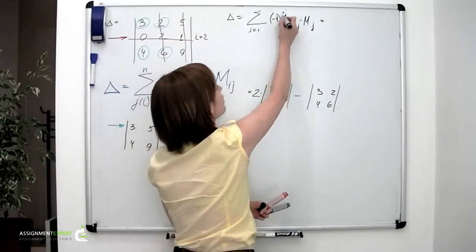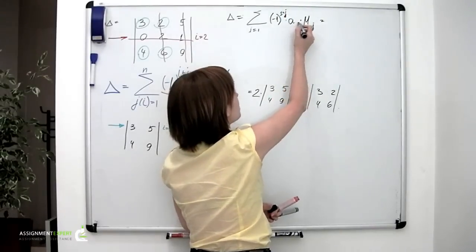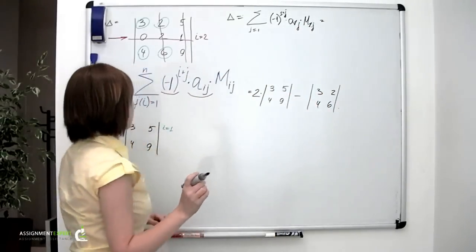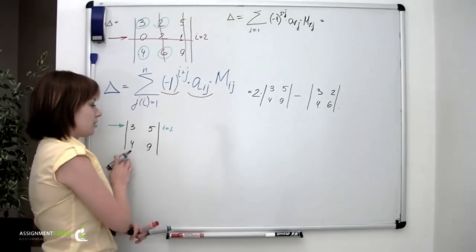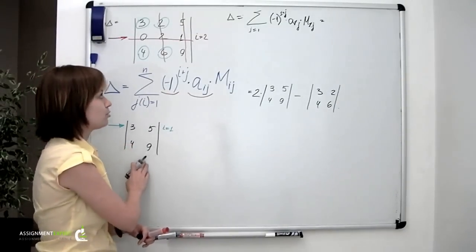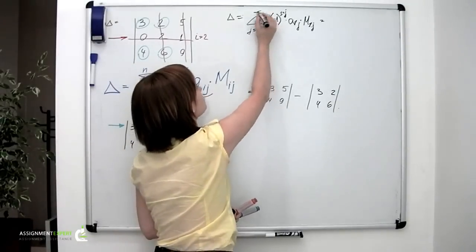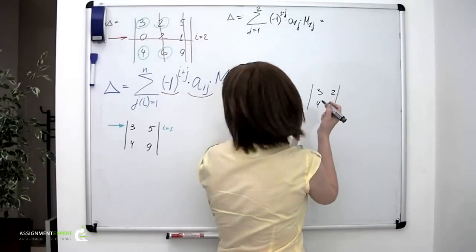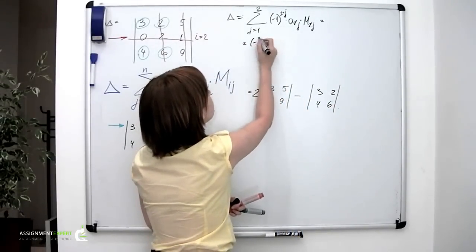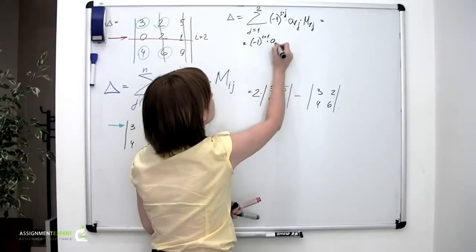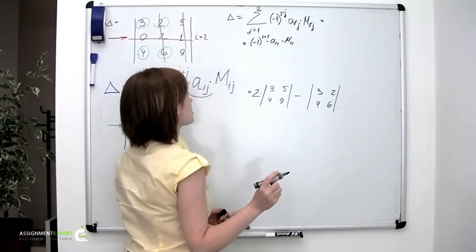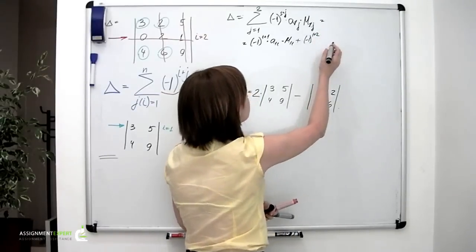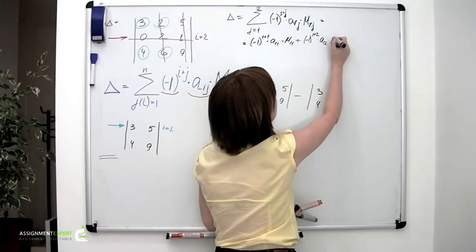And substituting in the same formula, it will look like this: (-1)^(1+j) times a_1j times M_1j. And since our determinant to calculate is of size 2 by 2, the number of columns in this determinant equals 2, therefore j changes from 1 to 2. So now in detail: minus 1 to the power of 1 plus 1 times a_1,1 times M_1,1 plus minus 1 to the power of 1 plus 2 times a_1,2 times M_1,2.